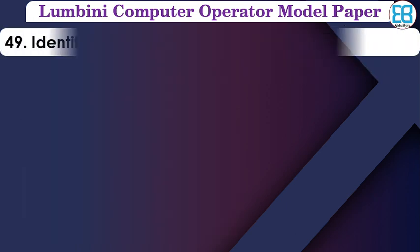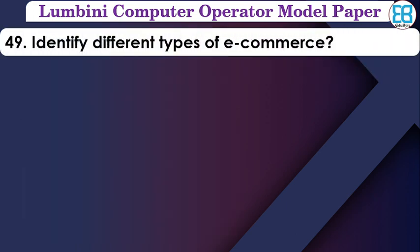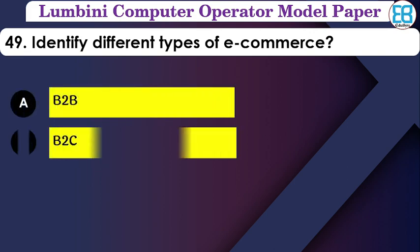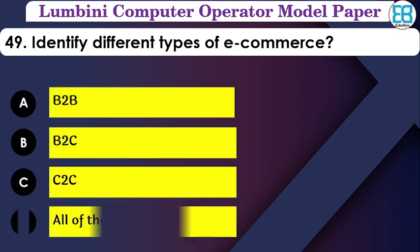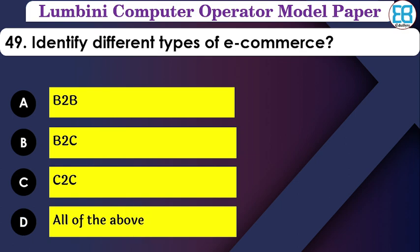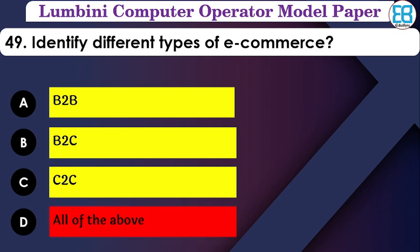Identify different types of e-commerce: B2B (Business to Business), B2C (Business to Consumer), C2C (Consumer to Consumer). The correct option is all of the above — B2B, B2C, and C2C are all types of e-commerce.